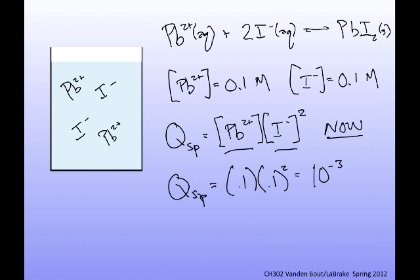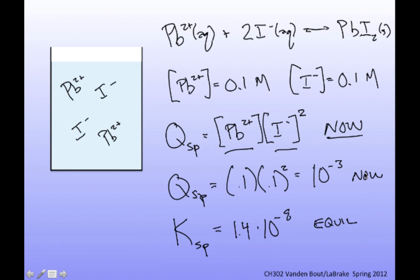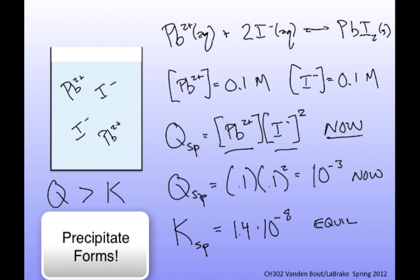Comparing to equilibrium: K_sp equals 1.4 × 10⁻⁸. The current concentrations are much higher than at equilibrium, so Q > K. To reach equilibrium, the concentrations must be lowered by forming an insoluble precipitate. So in this case, precipitation will occur.